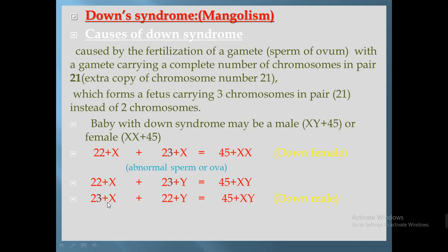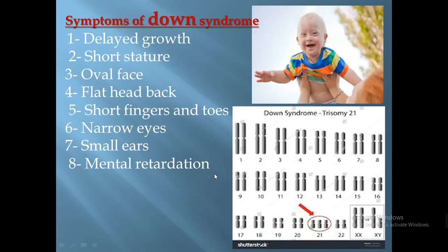Whether the abnormality comes from the ovum or the sperm, the result is the same — Down syndrome can be caused by either. The symptoms include short stature, flat head, oval face, short fingers and toes, narrow eyes, small ears, and mental retardation. The karyotype shows chromosome pair 21 carrying an extra copy, making the total 47 chromosomes instead of 46.